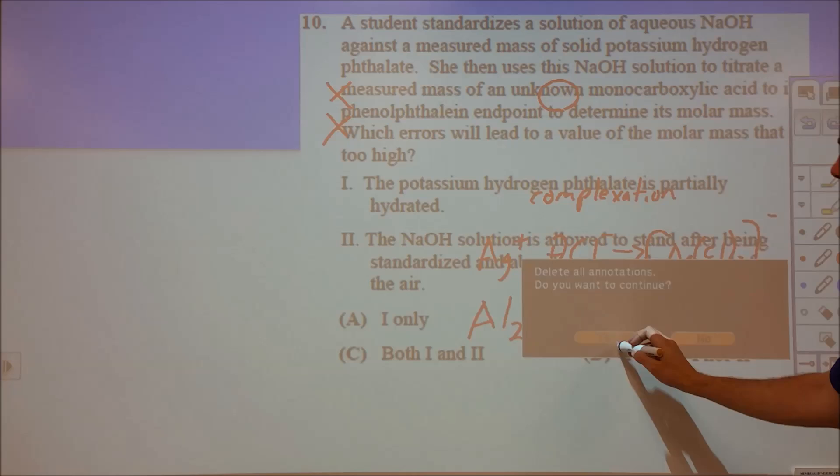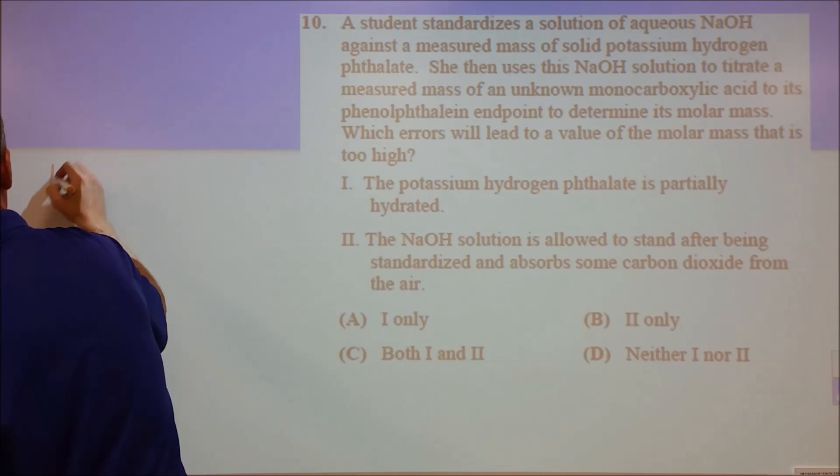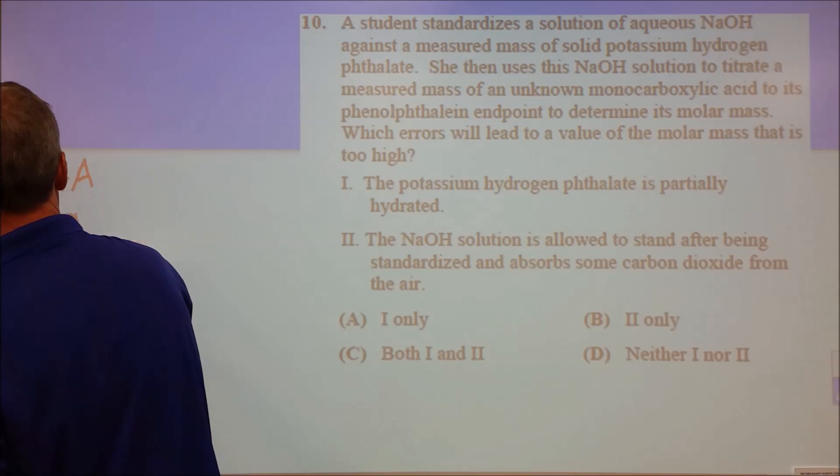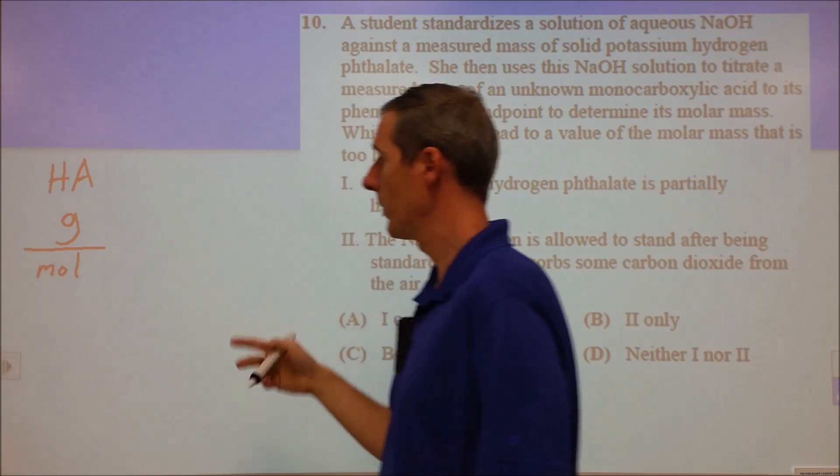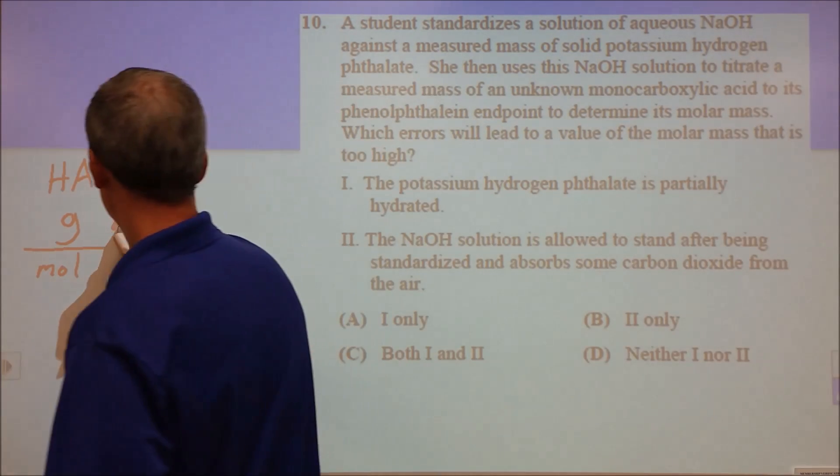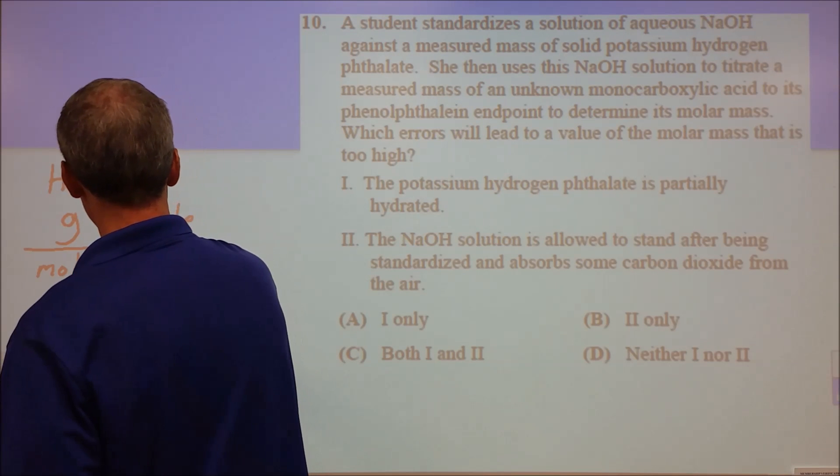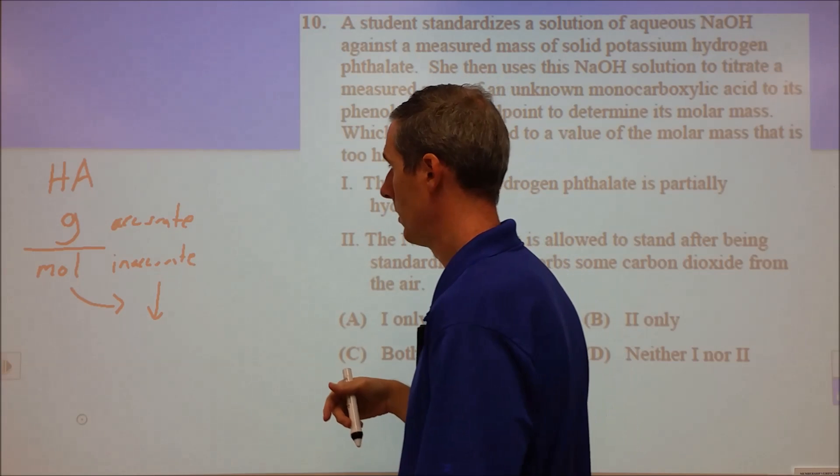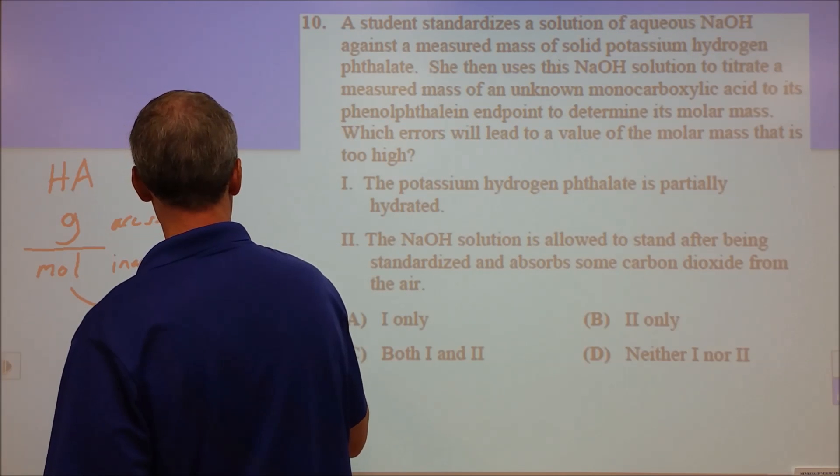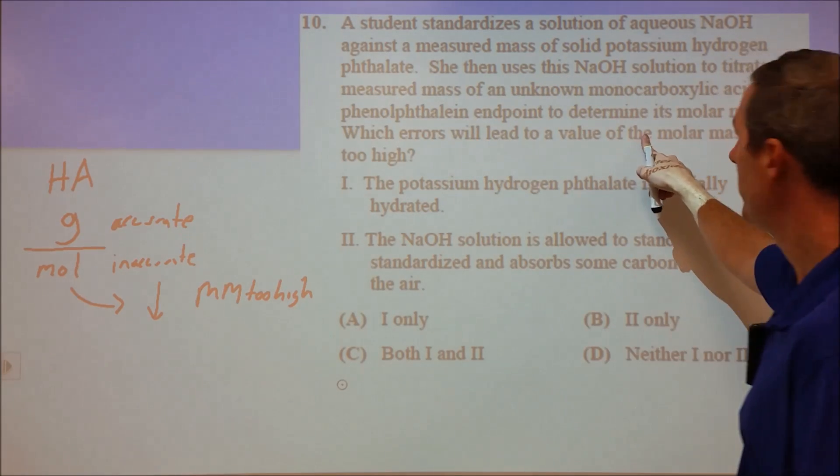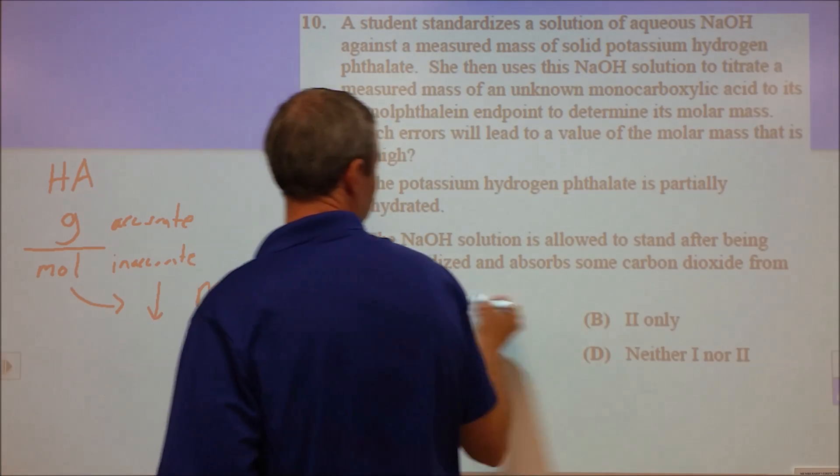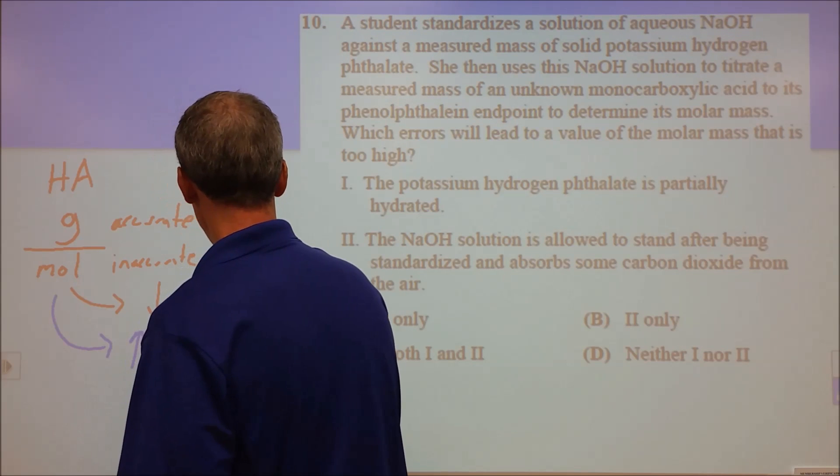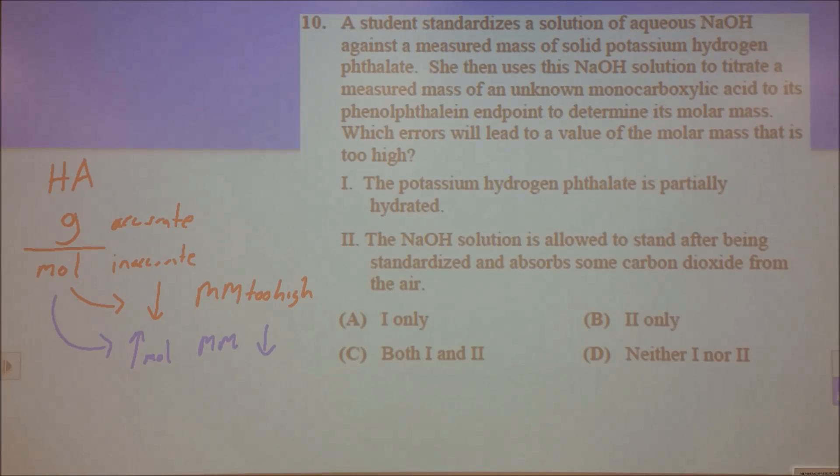Number ten is a very challenging question. We're looking at an unknown weak monoprotic carboxylic acid. We want to measure its molar mass by measuring grams and moles. The grams we measure, we'll assume that's accurate. But the moles will be inaccurate. If we underestimate the moles, that leads to a molar mass that's too high. If we overestimate the moles, the molar mass is too low. Scenario one: KHP is partially hydrated. That means we're overestimating the amount of KHP, which means we overestimate the hydroxide concentration in our standardized solution, which means we overestimate the moles of HA. If we overestimate moles, the molar mass goes down, so that's not a correct choice.